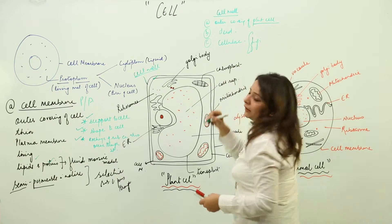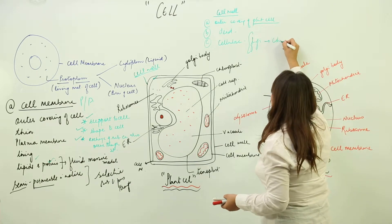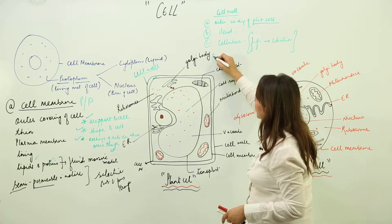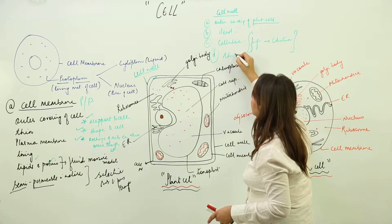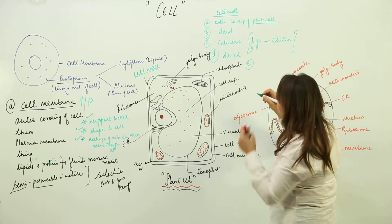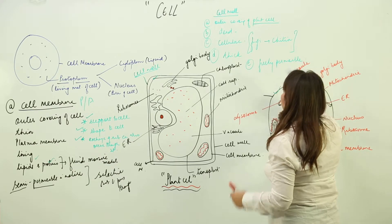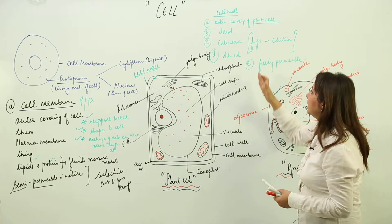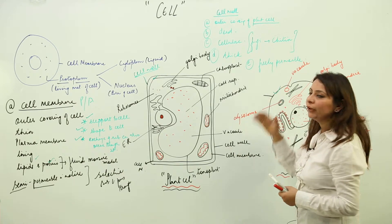In the case of fungi, the cell wall can be made up of chitin, a very hard substance. Compared to the cell membrane, the cell wall is thick. It is freely permeable — unlike the cell membrane which allows only selected substances, the cell wall allows any substance to pass in or out.